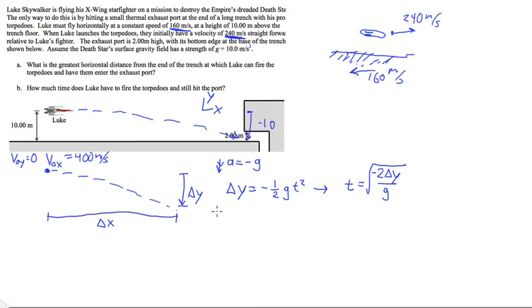To find the answer for part A, we need to start with Δy equals negative 10 meters. Then you can plug that in with g equals 10.0 meters per second squared. You get t is going to equal the square root of negative 2 times negative 10 meters, so you're going to get 20 meters on top divided by g, which is 10 meters per second squared. This is going to give you the square root of 2 seconds squared, and the square root of 2 is 1.414, so 1.414 seconds.